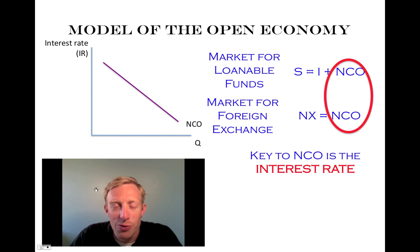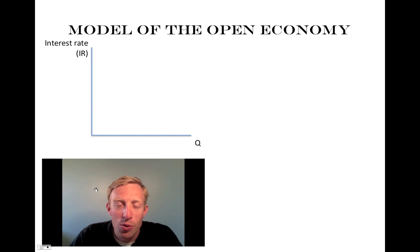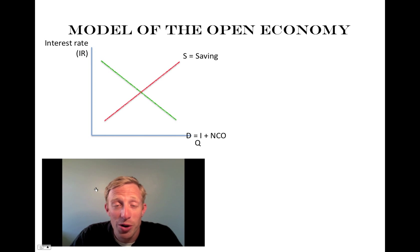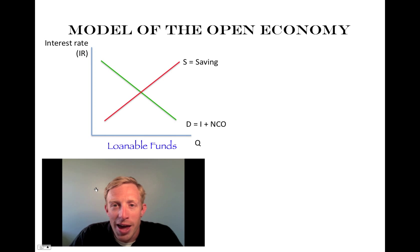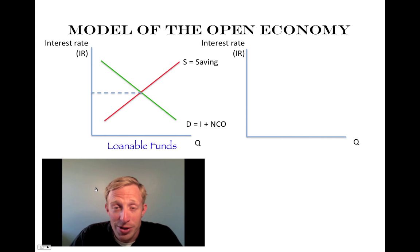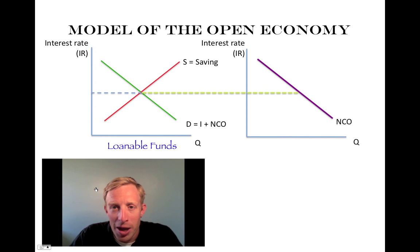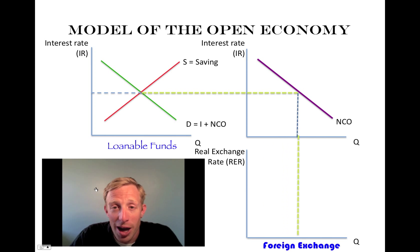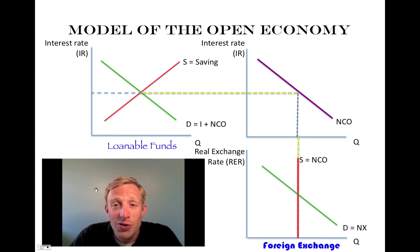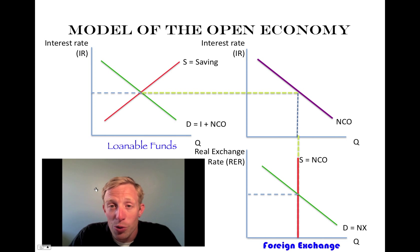Now we can put this whole model together to form the model of the open economy. We start with the market for loanable funds and find where demand and supply are equal — where savings and investment are equal — and find the interest rate. We take that interest rate over to our net capital outflow line; where that interest rate intersects the net capital outflow line, that sets the quantity of net capital outflow. We drop that down to the market for foreign exchange, and wherever the demand curve intersects with that vertical supply curve, we have our real exchange rate. So the interest rate from the loanable funds market sets the amount of net capital outflow, which helps determine the foreign exchange rate.